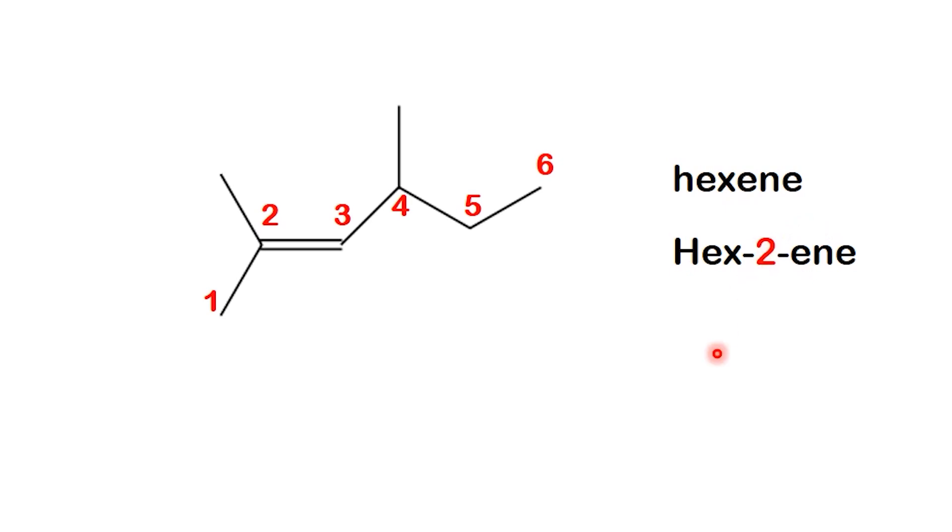Once the parent chain and the double bond are set, the next step is to identify the substituents. On carbon 2, we see a methyl group. On carbon 4, there's another methyl group. That gives us 2,4-dimethyl.